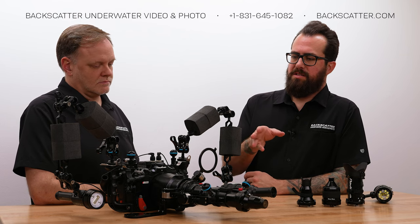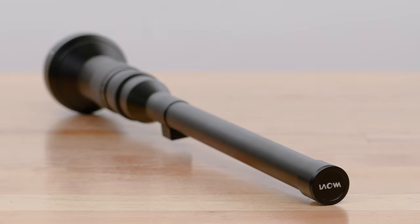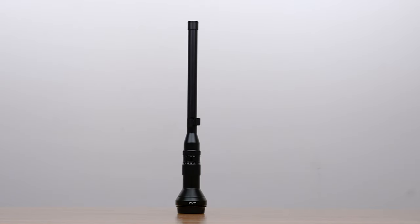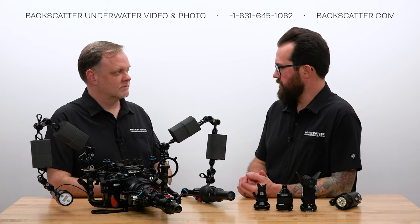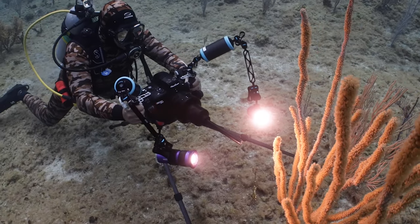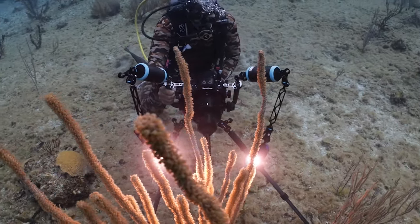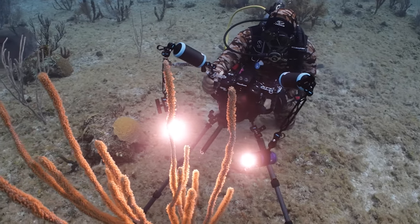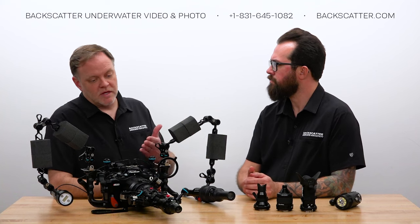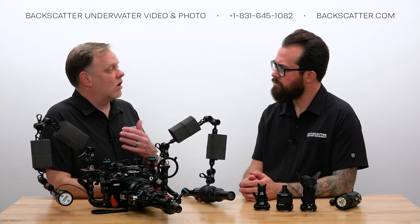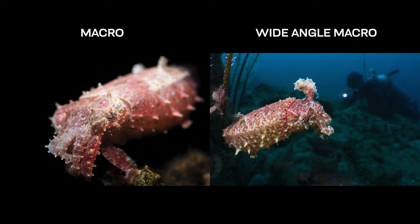So one of the last lenses of this style that we shot was the Laowa Venus 24mm probe lens. How does the EMWL compare to that? Yeah, they're quite different from each other. The Laowa lens is a dry mount lens, meaning it mounts directly to the camera, and then there's a port that seals against the side of the tube of the lens. The EMWL is completely self-contained for underwater use — it's a wet lens. You can put it on and off underwater if you want to. There's an advantage to that because you have choices: you want to do regular macro, you want to do wide angle macro — you can make that decision in the water. With the Venus lens, you're stuck.